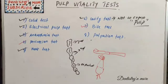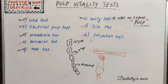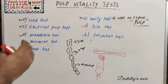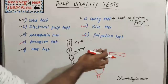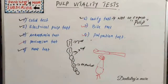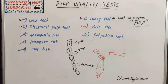The last test is palpation, where we use our index finger and place it at the periapical area — not on the tooth itself, but at the periapical area of the suspected tooth. The patient will report pain if the periapical area is infected, and no pain if it is intact. More accurate results can be obtained from a radiograph.